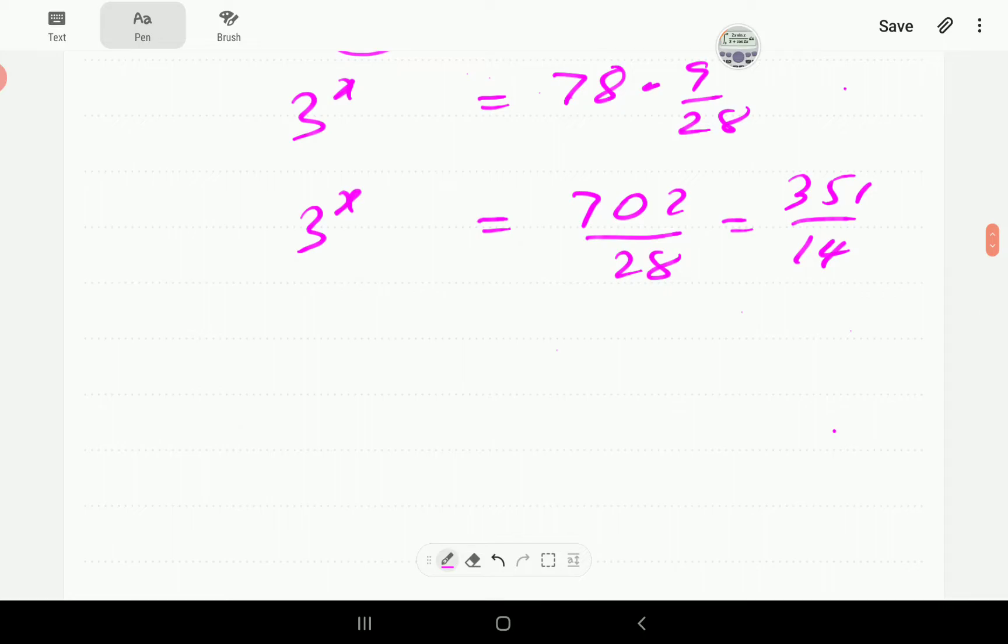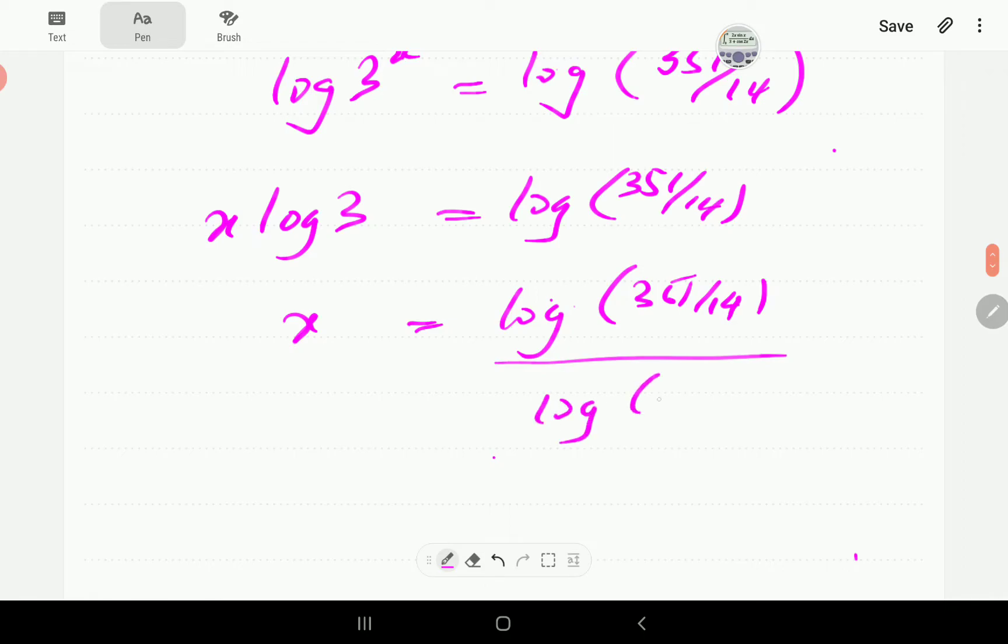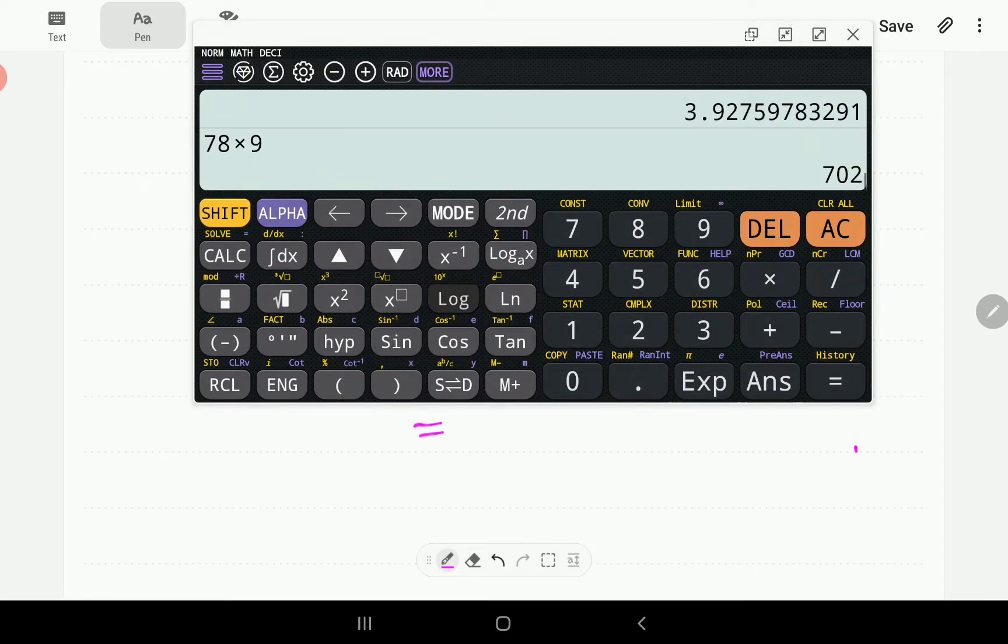Then if we take logs on both sides, log 3^x is log of 351 divided by 14. Then x log 3 is log 351 over 14 divided by log 3. Then we can punch that in the calculator. log 3^x is log 351 over 14. So log 351 divided by 14 divided by log 3.